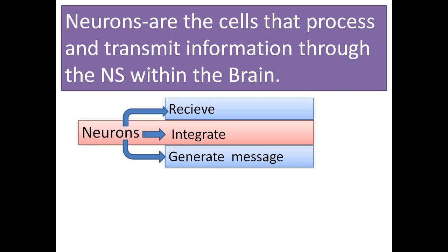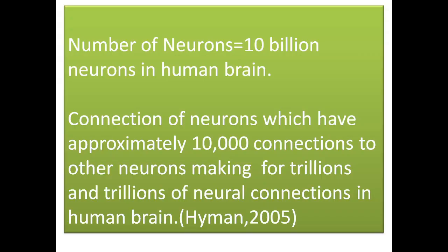Neurons are the second type of cells. These are the cells that process and transmit information through the nervous system within the brain. Neurons primarily serve three actions: they receive, integrate, and generate the sensory input and convert it into messages.